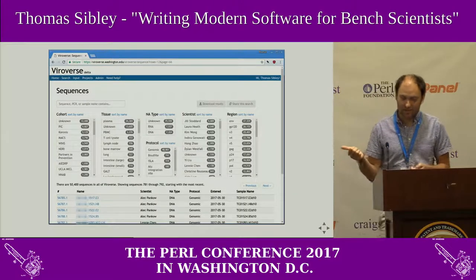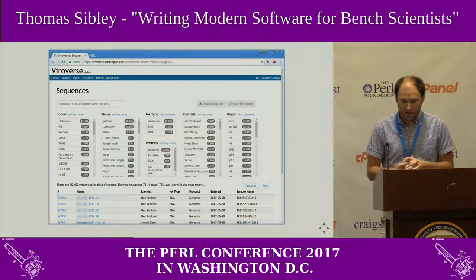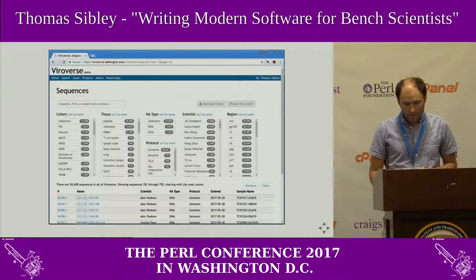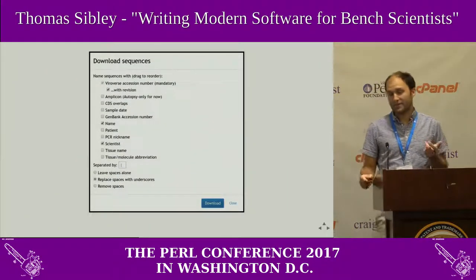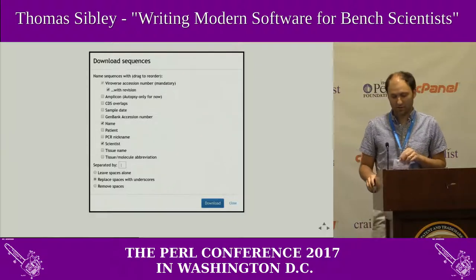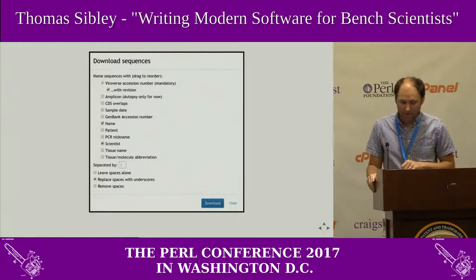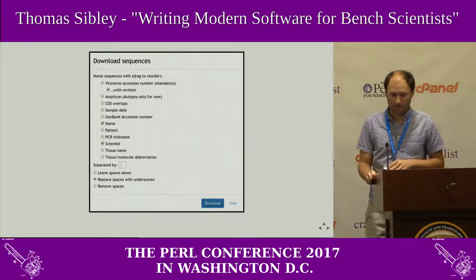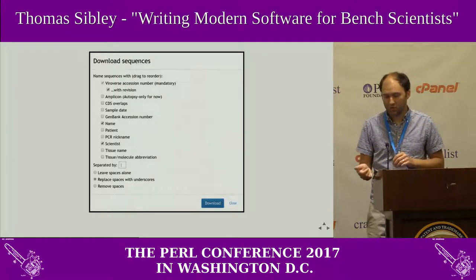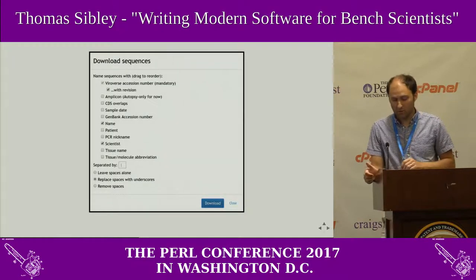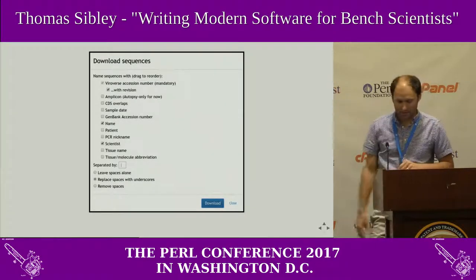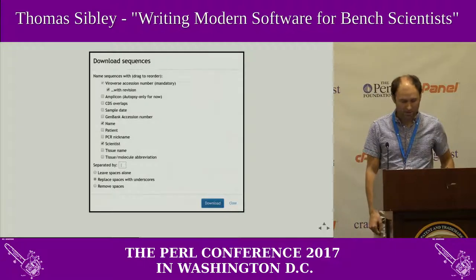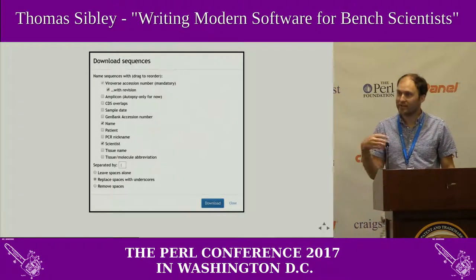We're also using a slimmed-down version of the same component to replace some data tables, since it works nicely as a general filter interface. Crucially, now that people had a way to find the sequences they wanted, the download process also let you choose how you wanted the sequences named. This widget is simple but intuitive and super useful to the scientists — you check the fields you want in your sequence names, drag those fields around in the list, and that's the order the names come out in. You can change the delimiter and off you go.